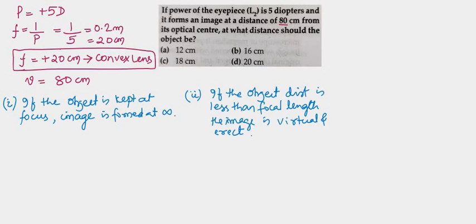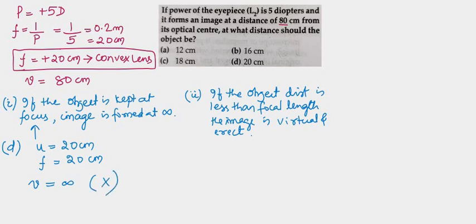Coming to the solution, let's take up option D first. For option D, the object distance u is 20 centimeter, and we have the focal length as 20 centimeter. It means if the object is kept at 20 centimeter — that is, at the focus — the image will be formed at infinity. So the image distance would be infinity. This option is not true because our image distance is given as plus 80 centimeter, so option D is ruled out.